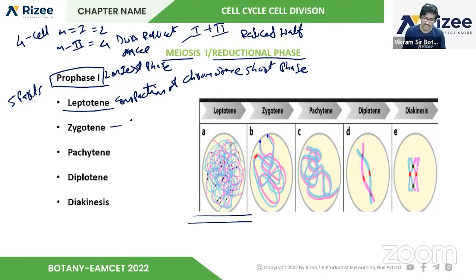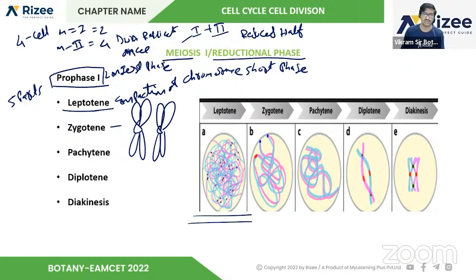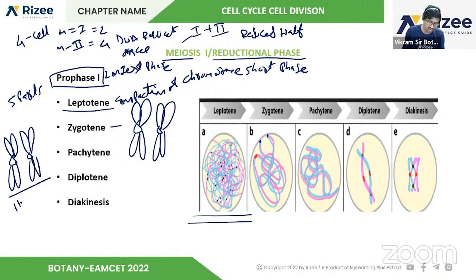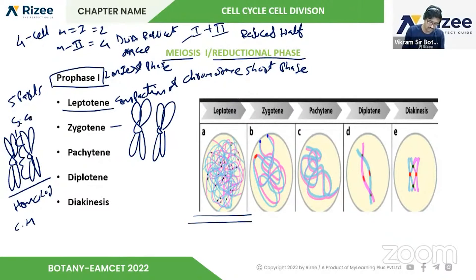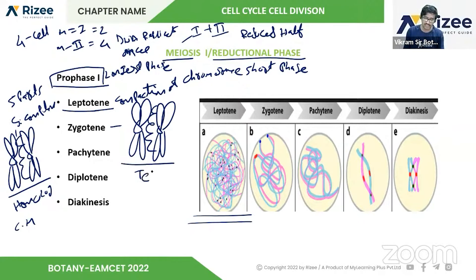Next is the zygotene stage, which involves the formation and pairing of homologous chromosomes. In this stage we can see the synaptonemal complex. At any time we can also observe the tetrad condition, also called bivalent.